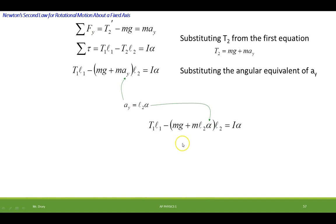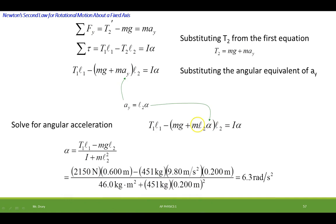And now I'm going to solve for angular acceleration. So that's just a little bit of algebra solving for this angular acceleration that's in two terms. And it comes out to 6.3 radians per second squared.